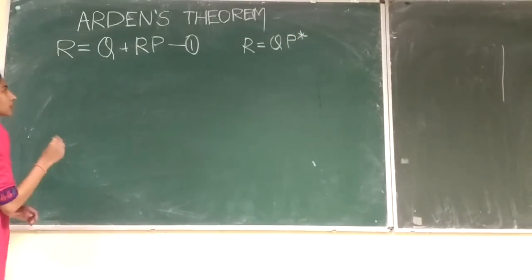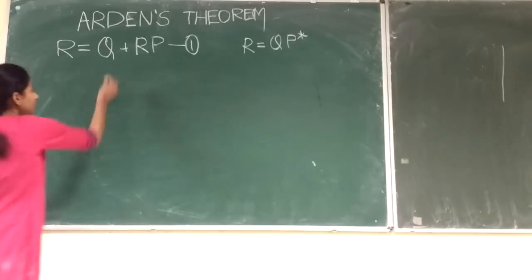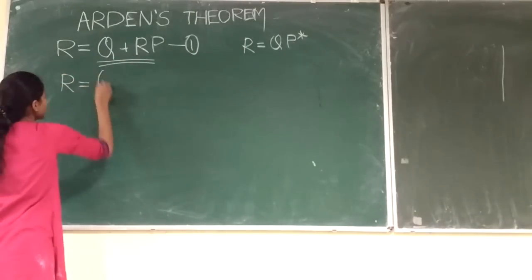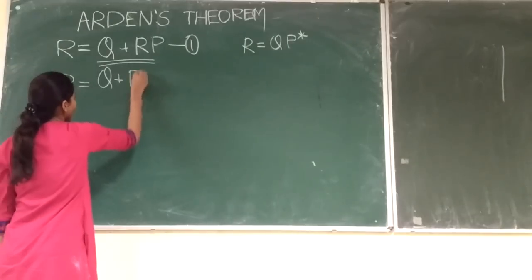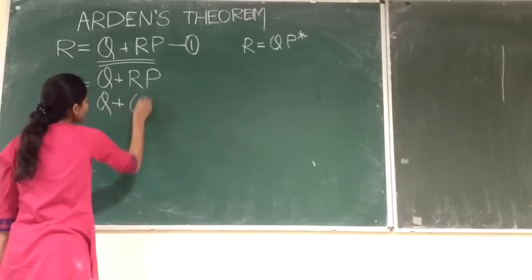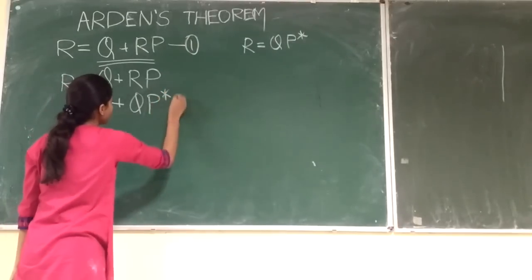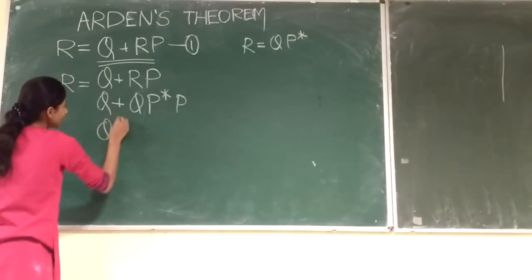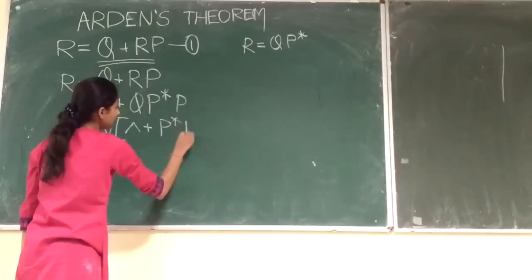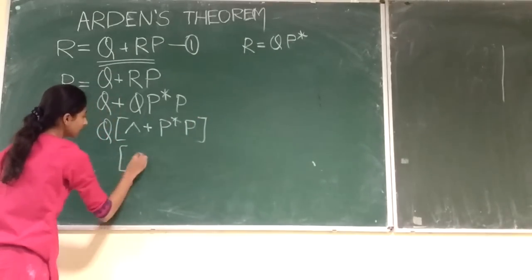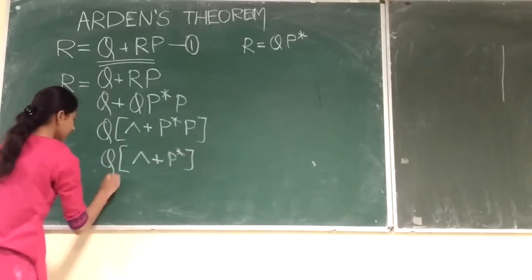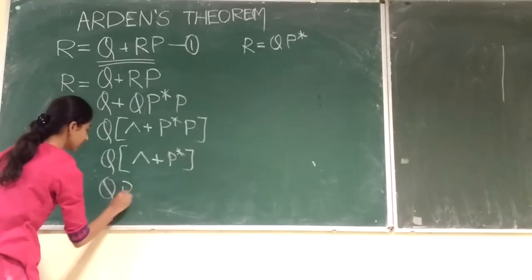Now let's first put the RHS value R = QP* into this equation. What we will get is R = Q + RP. Putting R = QP* here, we get Q plus QP* into P. Taking Q as common, we get Q times (null + P* P), which gives null + P*, so we get QP*.